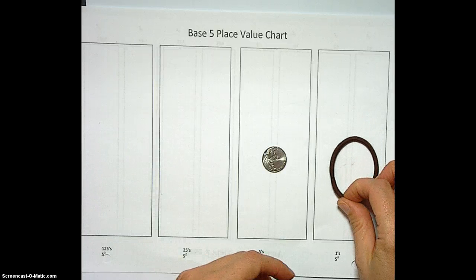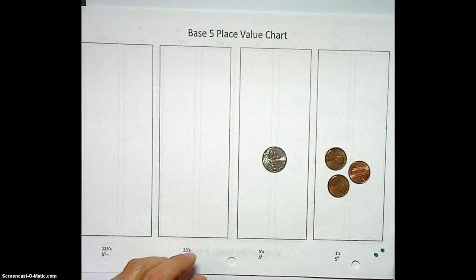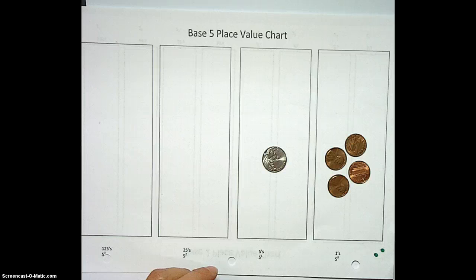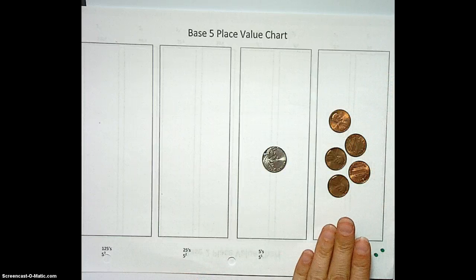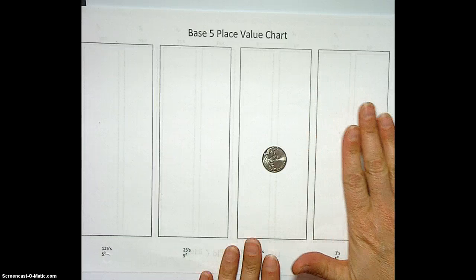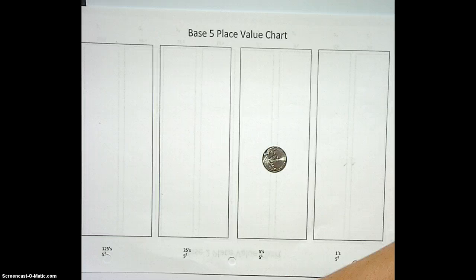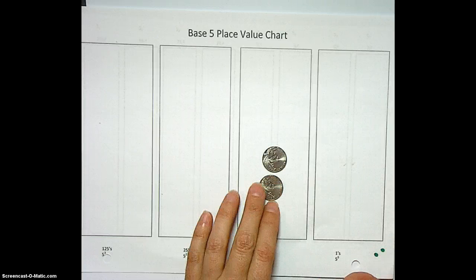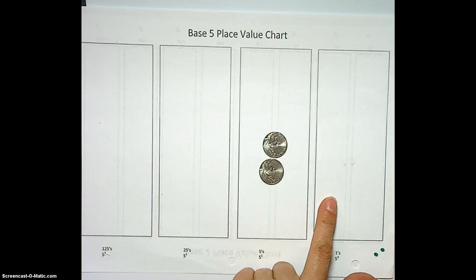Words are escaping me. Okay, so we have 1, 0, then 1, 1, 1, 2, 1, 3, 1, 4. There is no 1, 5. Again, what do we do? Exchange. Exchange, or trade in is another way to say it. We're going to trade in those 5 pennies for 1 nickel, and this represents 2, 0 base 5. Awesome.